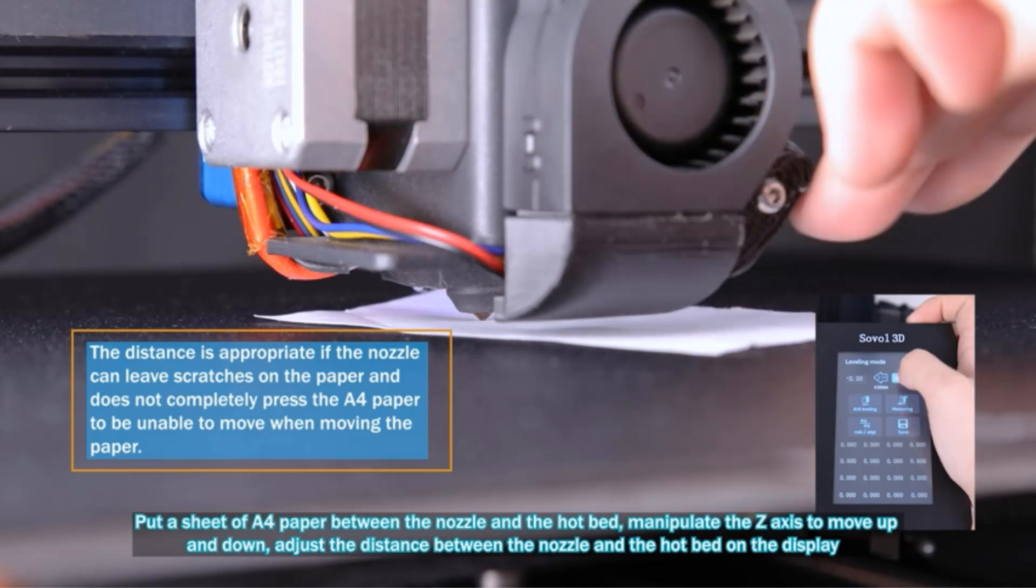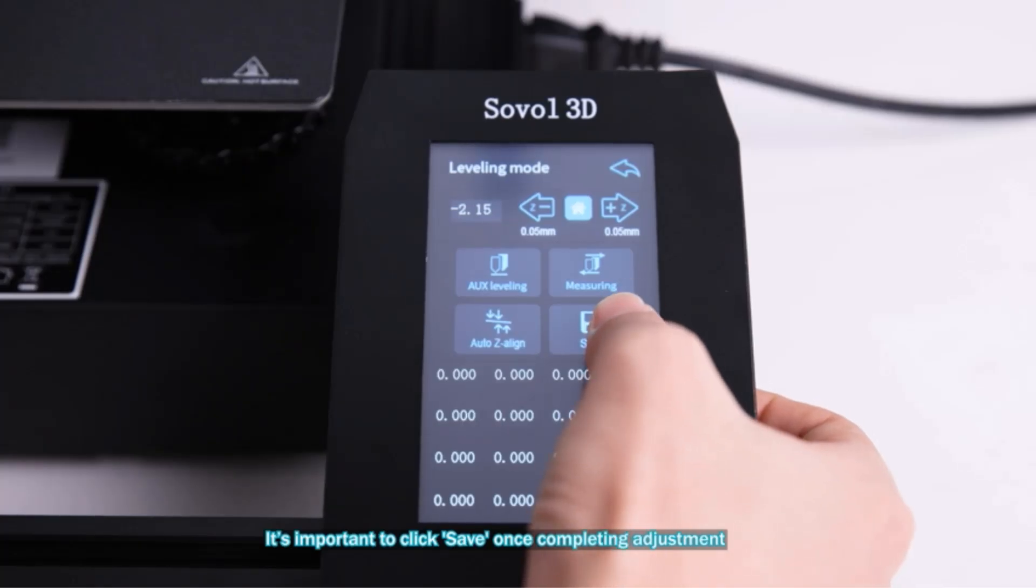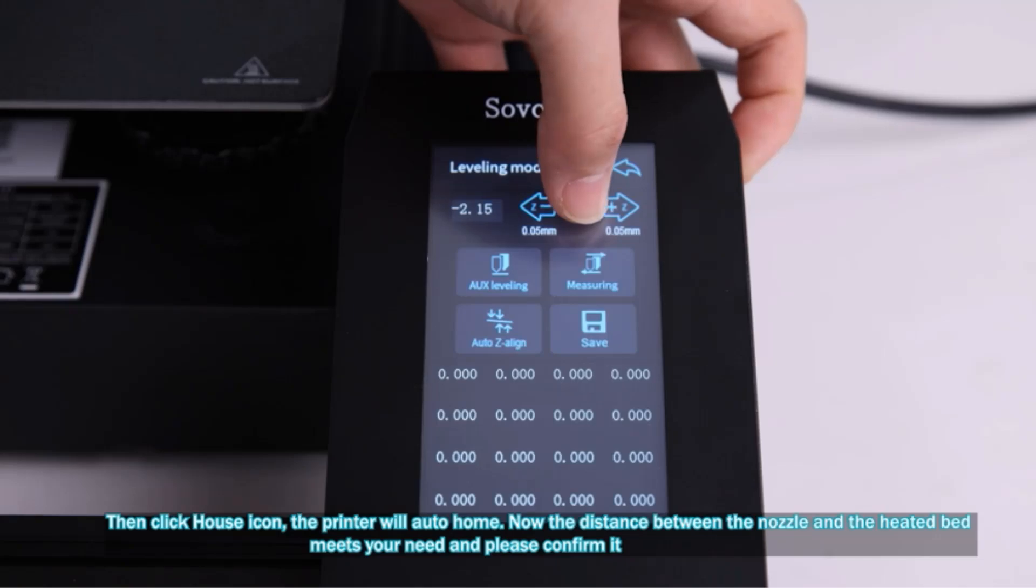With key components like the cantilever, gantry, and nozzle already assembled, users can start printing within 15 minutes of unboxing the printer.